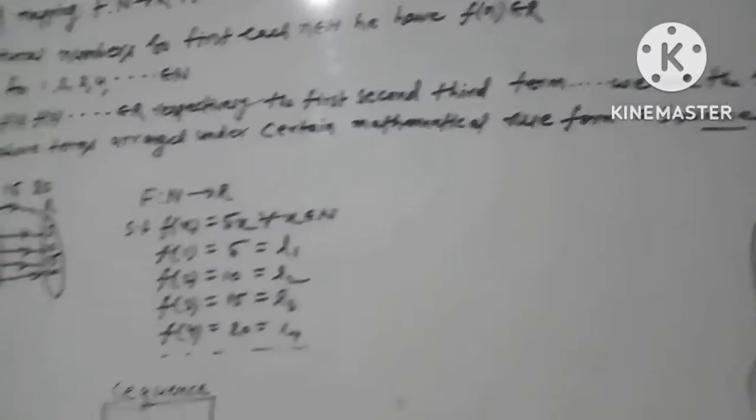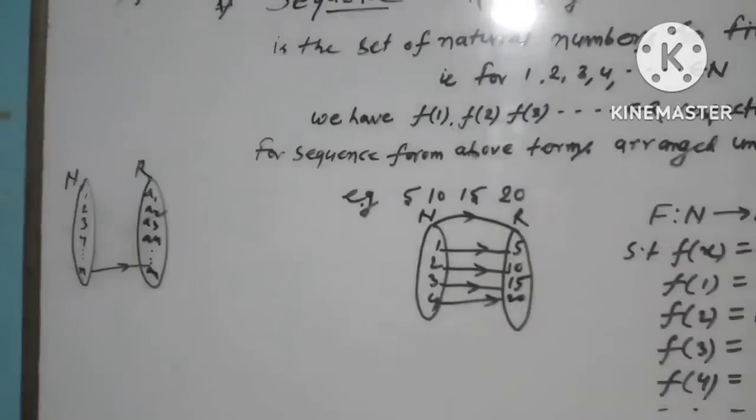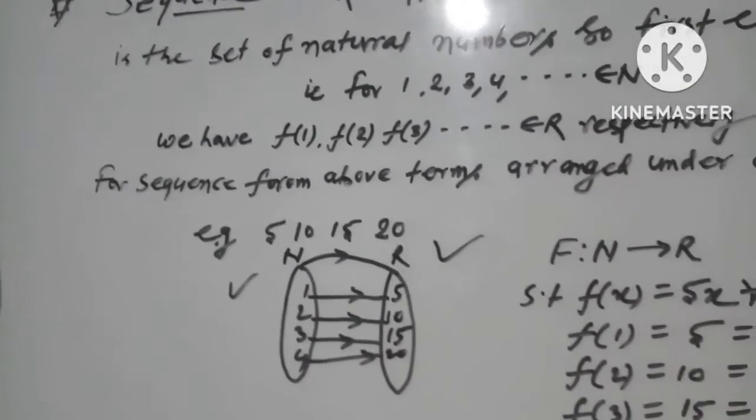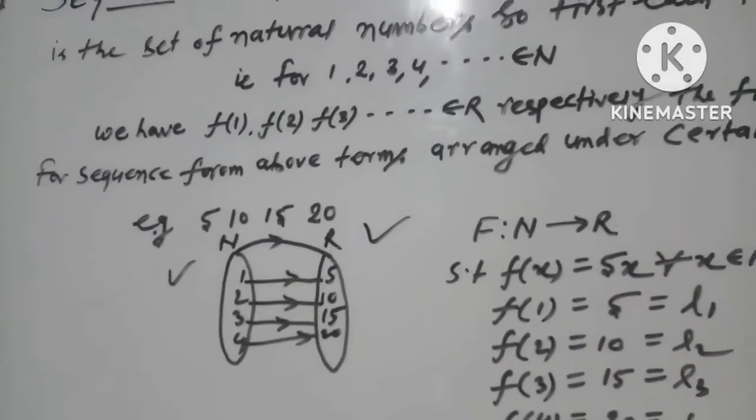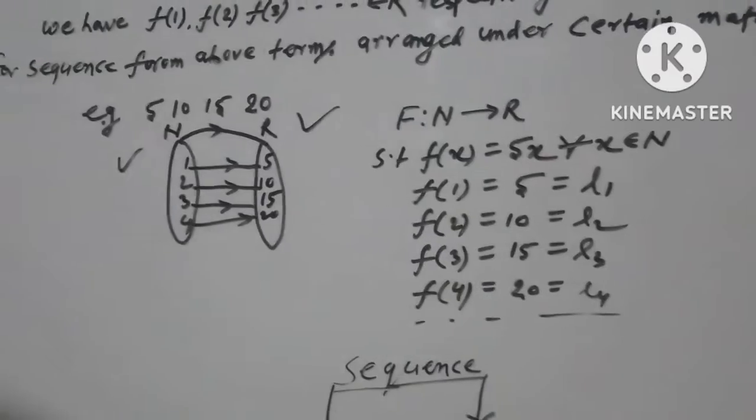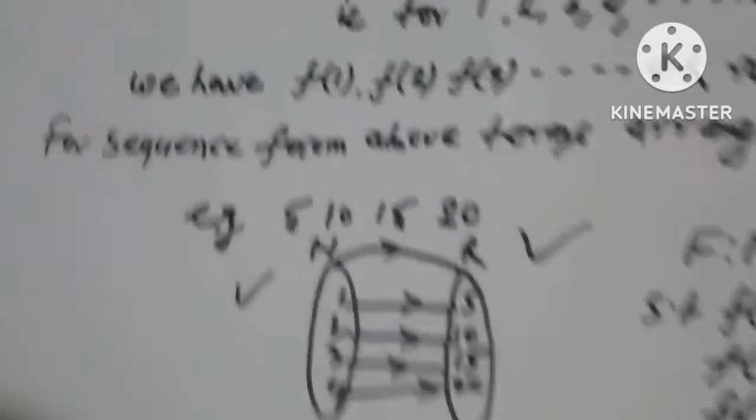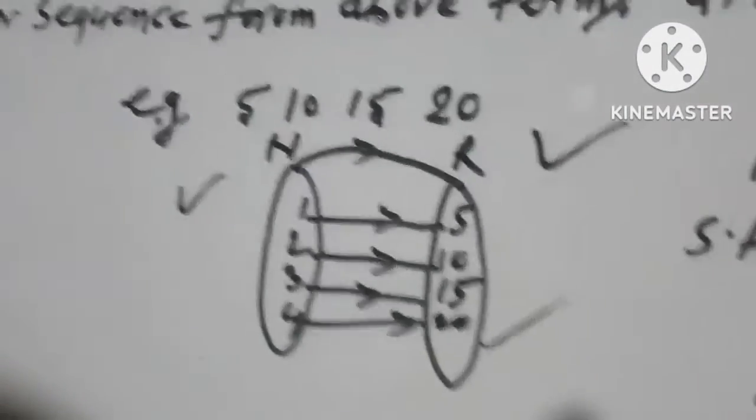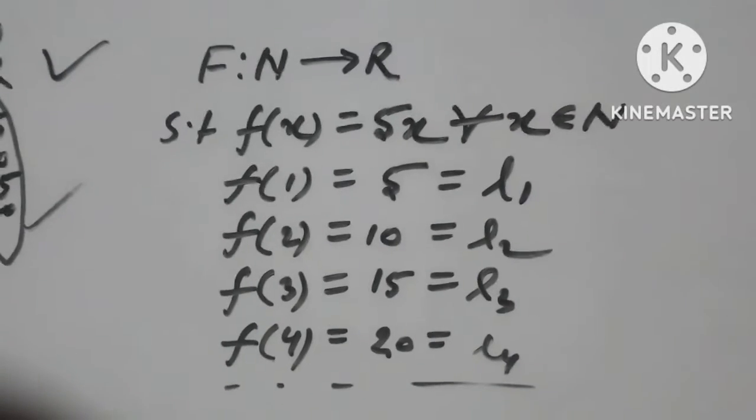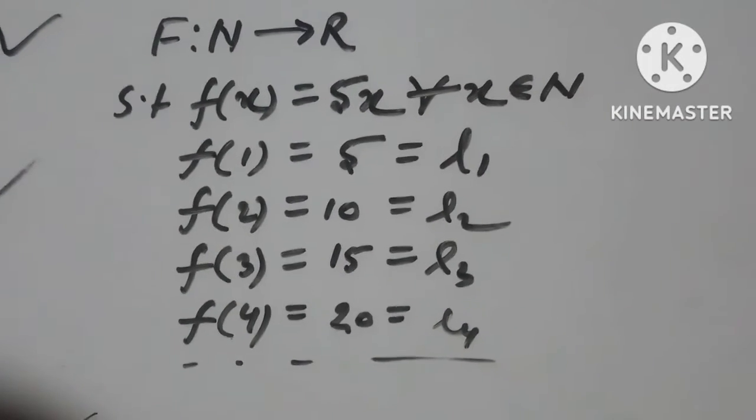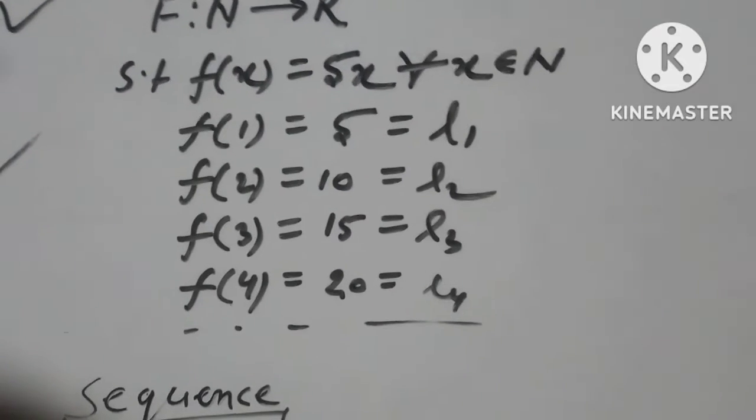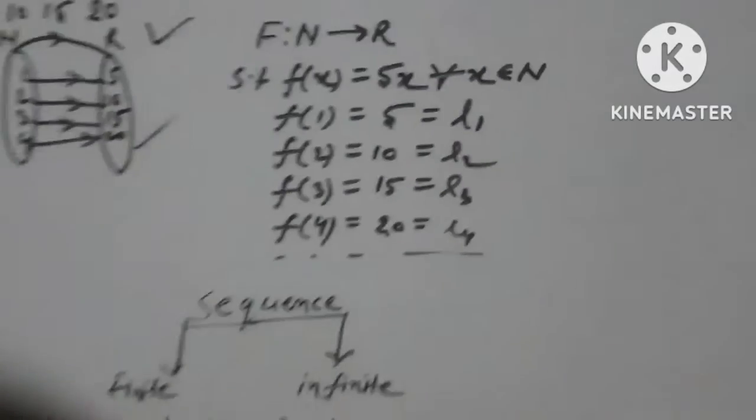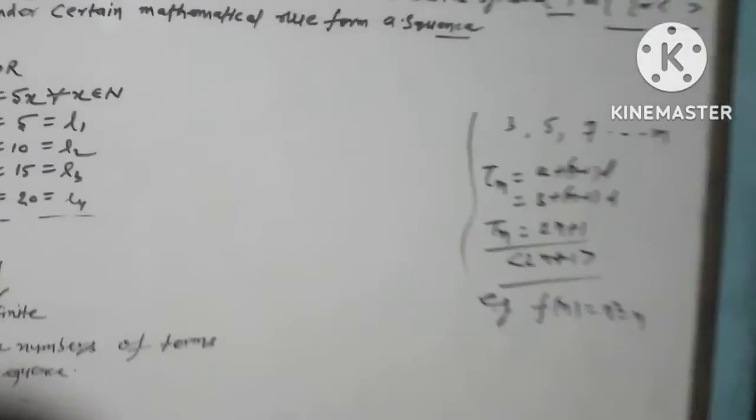F:N→R, natural number or real number. Here natural number or real number, example is given as 5, 10, 15, 20. So natural number to real number mapping is defined. F such that n tends to R, such that F(x) for all x belongs to natural number. F(1) equals 5 equals L1, F(2) equals 10 equals L2. This way we can work out examples.